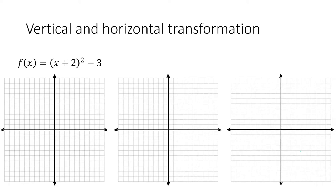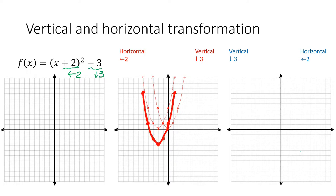Here we have the function f(x) equals (x + 2)² minus 3. First, determine the transformations. The plus 2 here is going to move the graph to the left 2, and the minus 3 is going to move it down 3. Let's see if the order matters. This time, we are going to move it left 2 first, and then down 3.